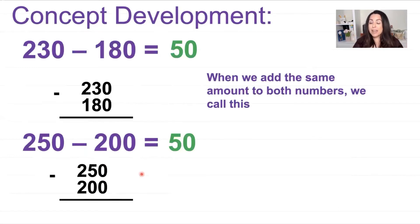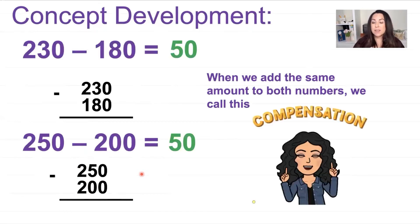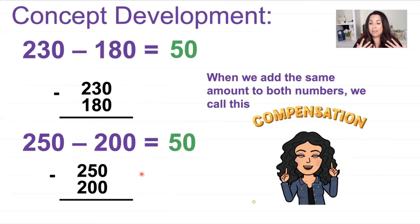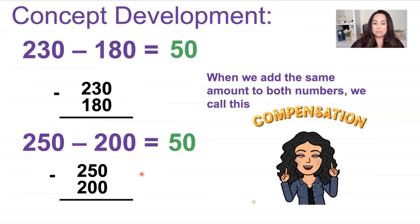When we add the same amount to both numbers, we call this compensation. I've been calling it a new strategy, but this is the compensation strategy. So now that we have a name for it, let's go ahead and try the compensation strategy on another problem.